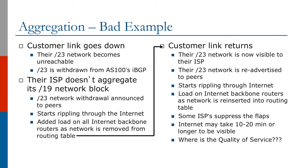When the customer link returns, their slash 23 network is now visible to their ISP and is re-advertised to peers. This starts rippling through the internet again and adds load on internet backbone routers as the network is reinserted into the routing table. Some ISPs suppress the flaps and the internet may take 10 to 20 minutes or longer for this network to be visible. This means that quality of service is not guaranteed for this network.